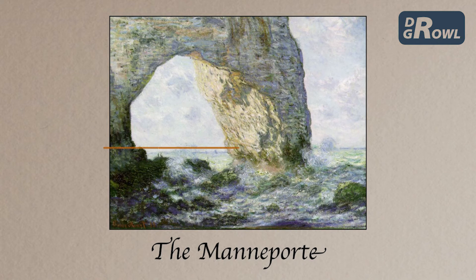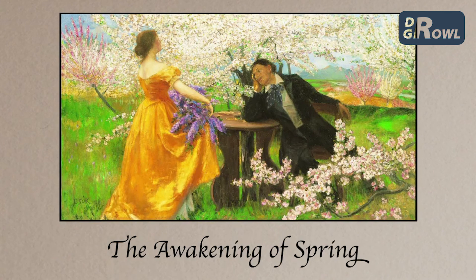In Claude Monet's The Man Porte, we can see that if the phi proportion is chosen to plot the line of the horizon, the theme is given more emphasis, and it also generates some sort of harmony.